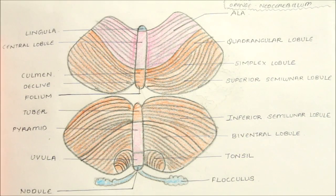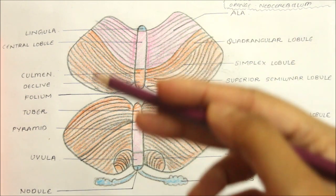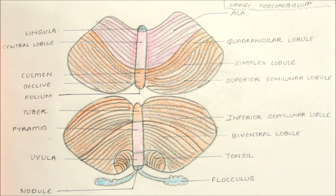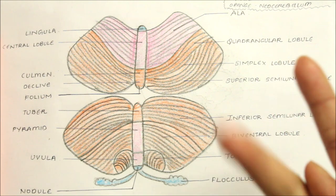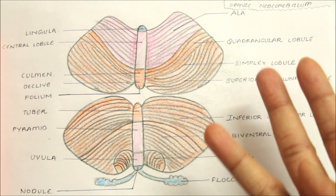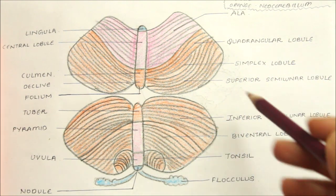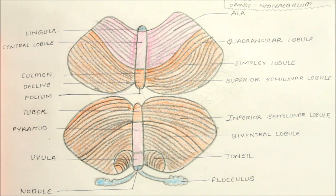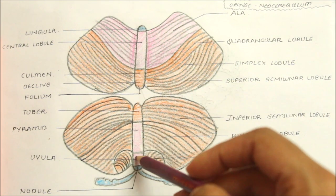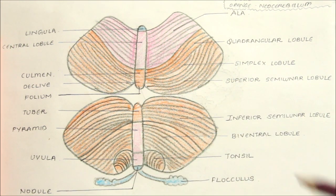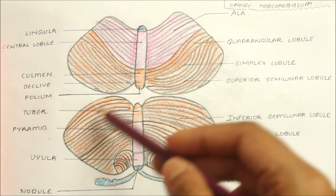Next let's move on to the morphological and functional divisions of the cerebellum. There are three morphological divisions: archicerebellum, paleocerebellum, and neocerebellum. In this diagram, archicerebellum is shown in blue, paleocerebellum in pink, and neocerebellum in orange.